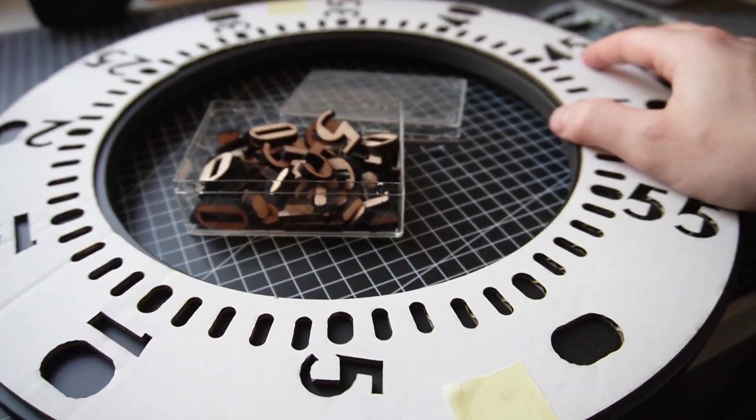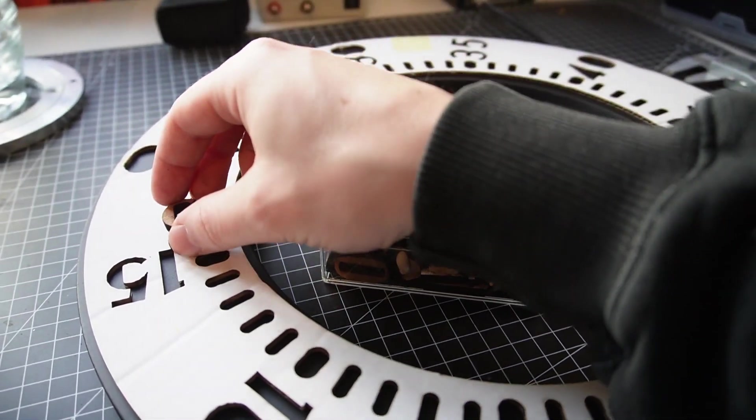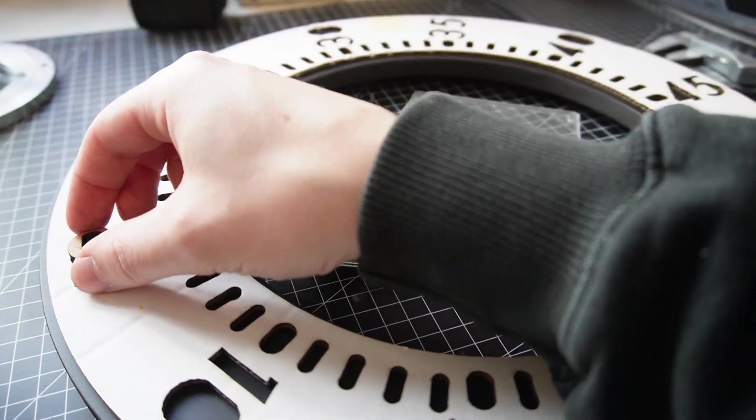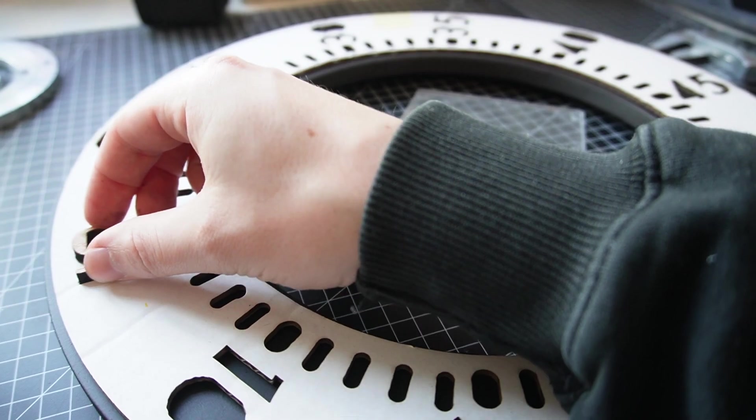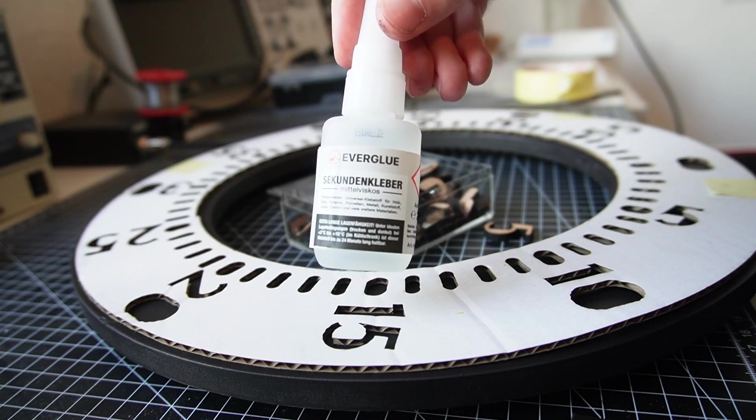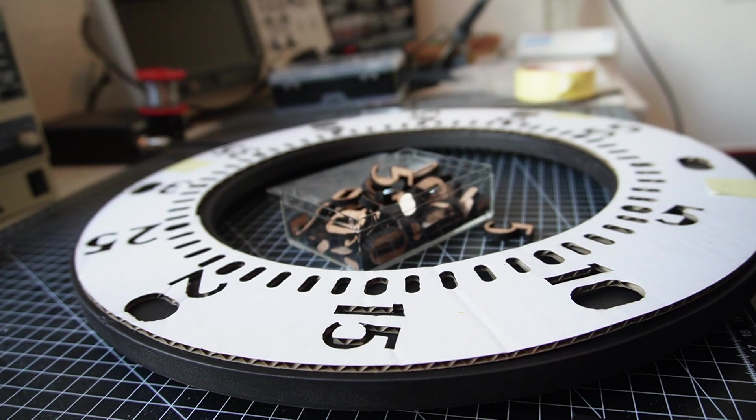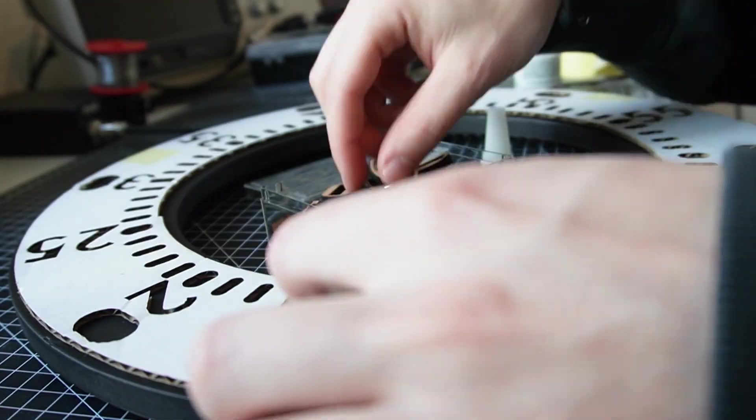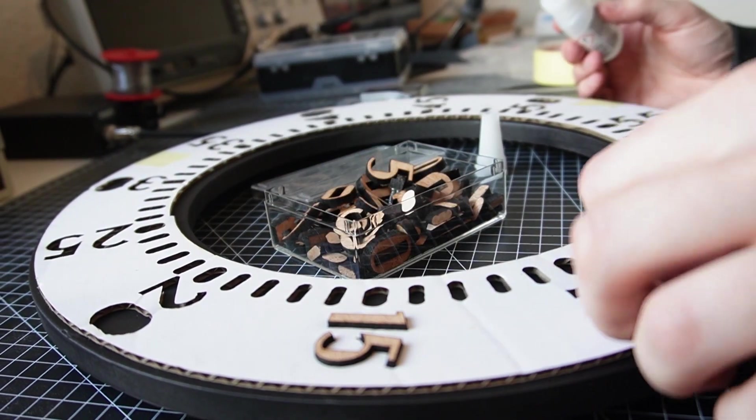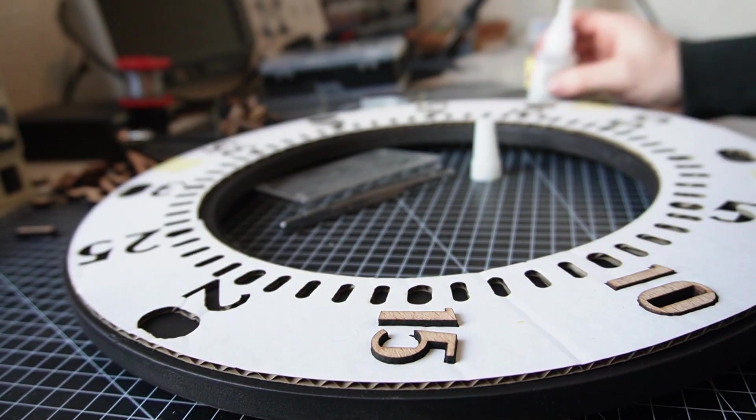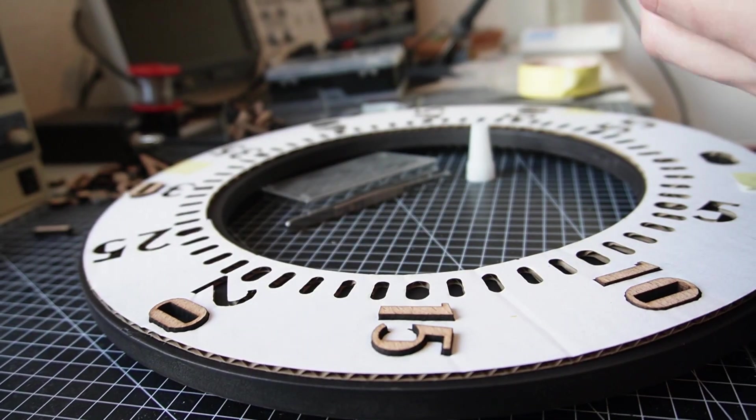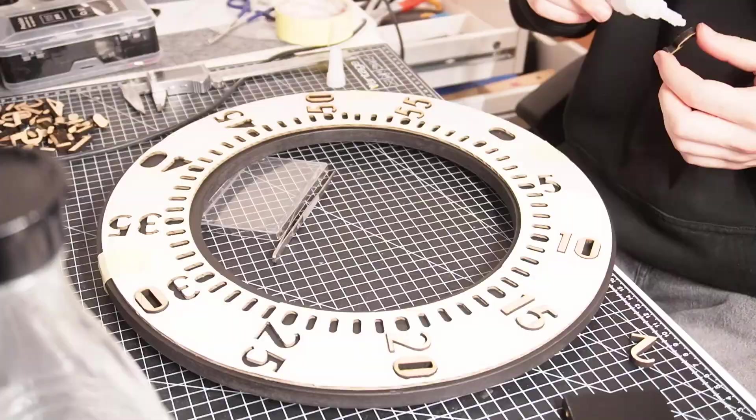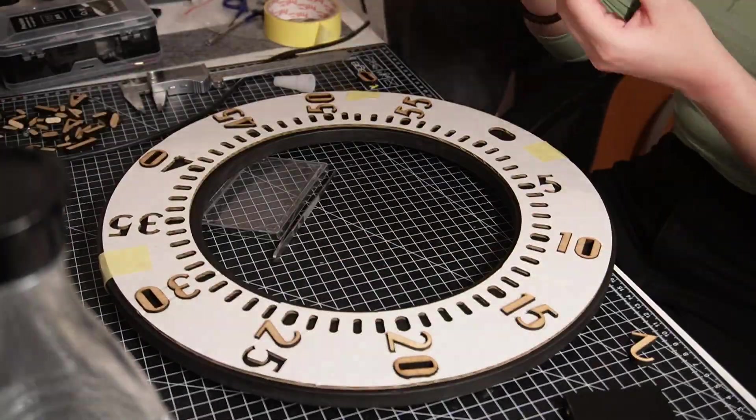Now I glued the template to the ring and I will start gluing the letters inside the template and onto the ring and for that I will use super glue. It was a quite satisfying process gluing the numbers onto the clock so my girlfriend was happy to help.